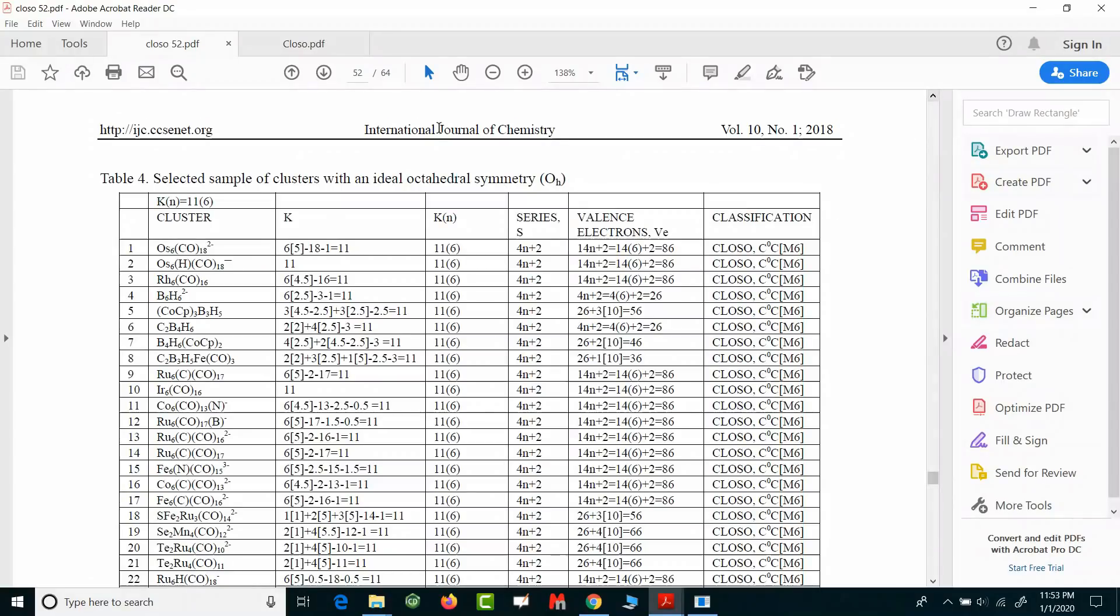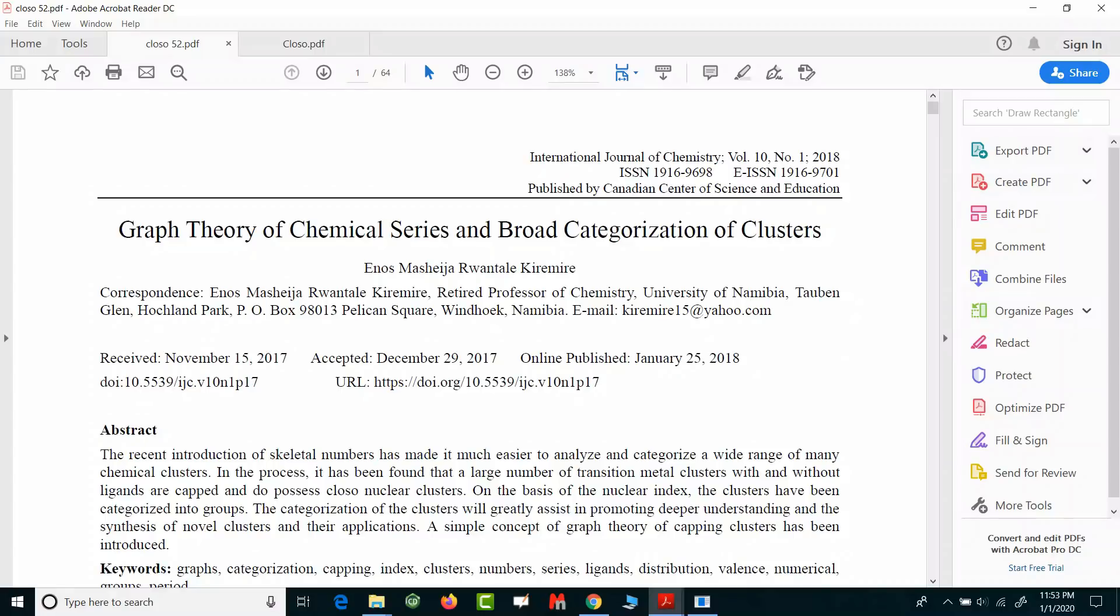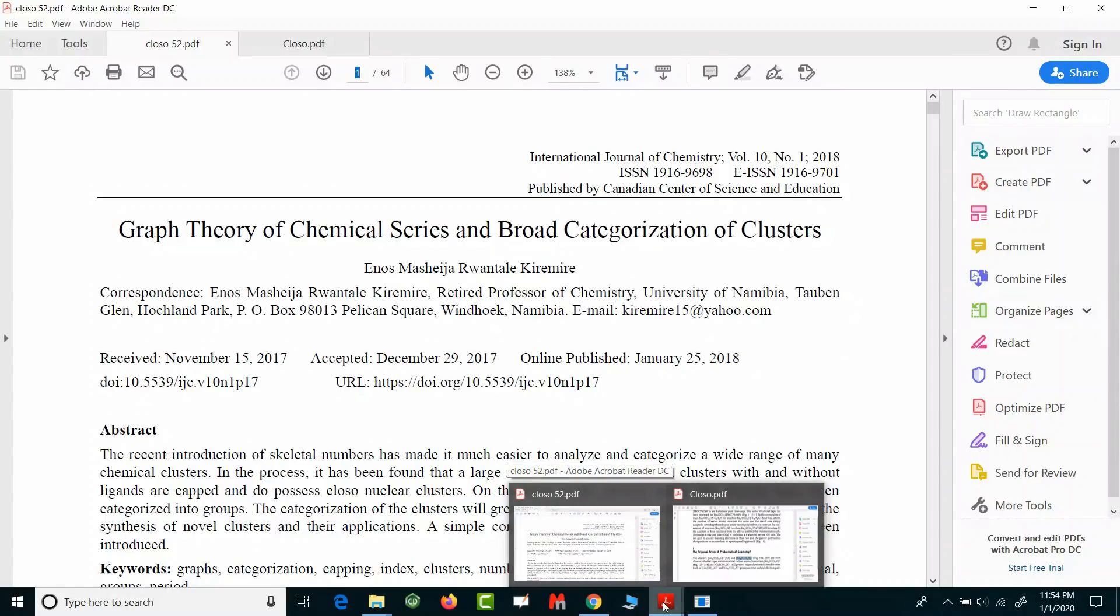This second one that I was talking about—if you just type the caption of this second one, the heading of this particular article—it is 'Graph Theory of Chemical Series and Broad Categorization of Clusters.' This is published by Canadian Center of Science and Education. The journal name is International Journal of Chemistry. It's not very reputed but it's also a reference. You can just go to page number 52 and you will find it. This is actually easily available; you won't even have to have access to this particular article. You don't need any special permissions for that. For the Springer article you would need the permissions.